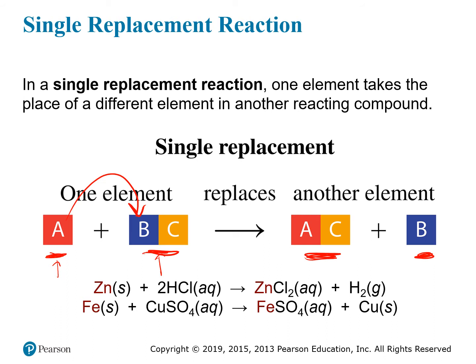A good example is zinc dissolving in hydrochloric acid. The zinc combines with the chloride ions from the hydrochloric acid, and the hydrogen escapes and pairs up to form hydrogen gas. Similarly, iron reacting with copper sulfate will replace the copper, yielding iron sulfate, while the copper is left alone. These are both single replacement reactions.